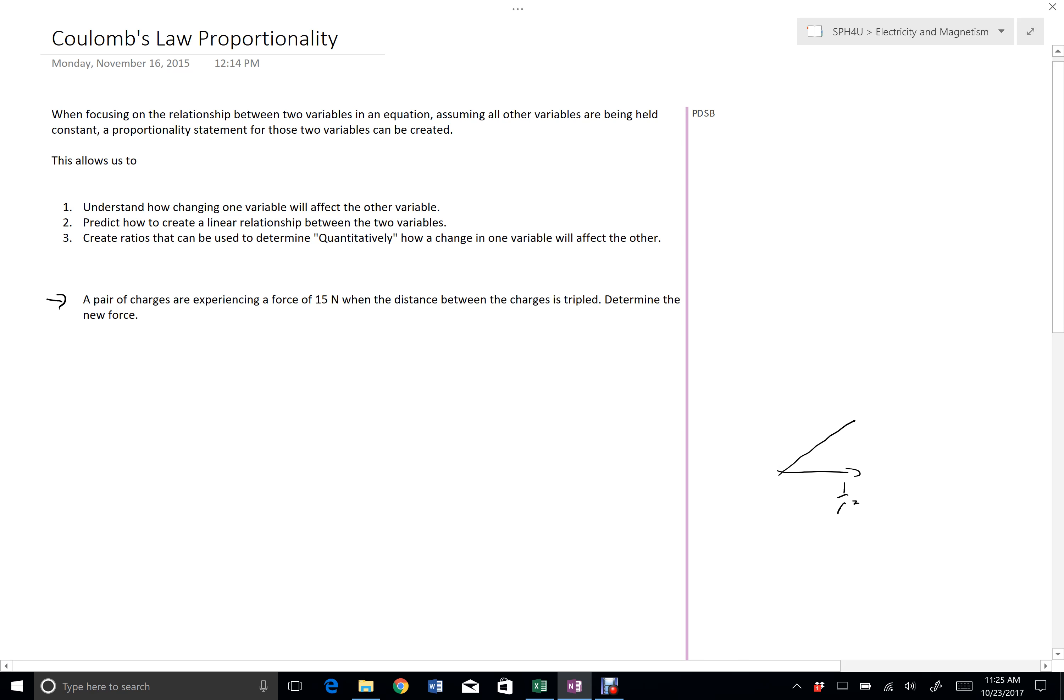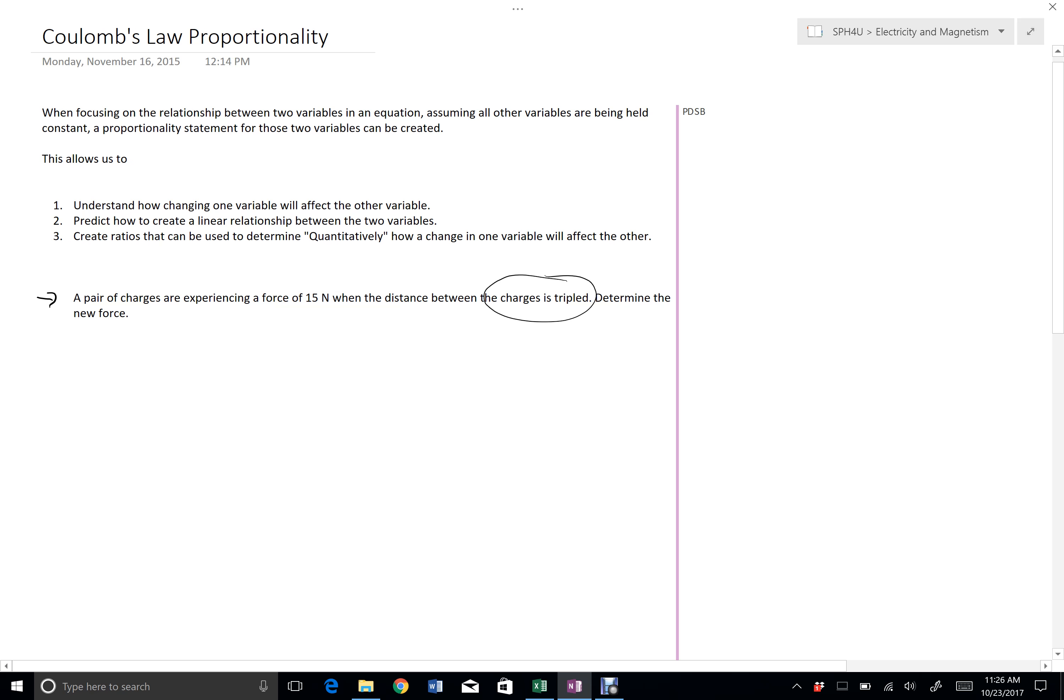So I can use it to predict a resulting change on force when I only change the one variable of interest. Here I said when the distance between the charges is tripled. So again, the original law, F equals KQQ over R squared. I'm interested in the relationship between F and R squared, so I can say FE is proportional to 1 over R squared.